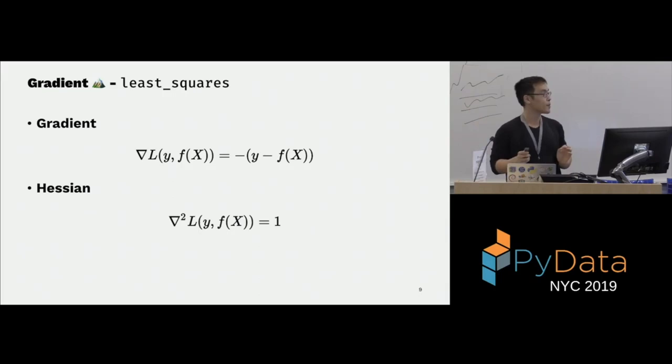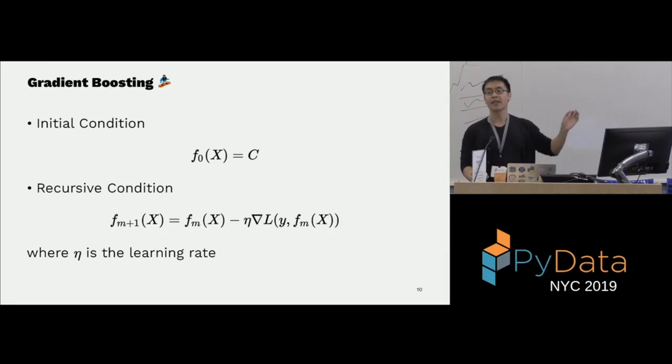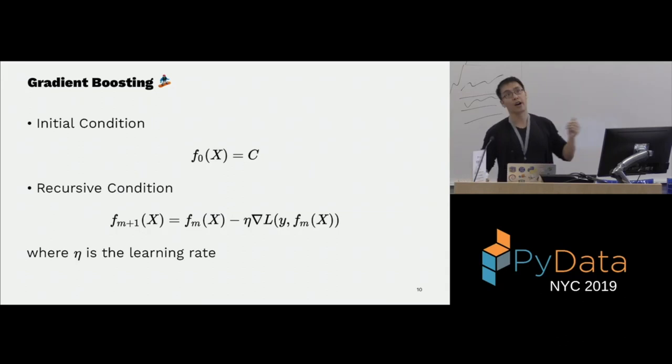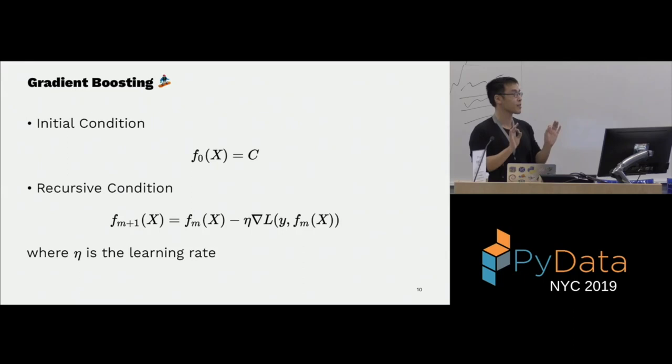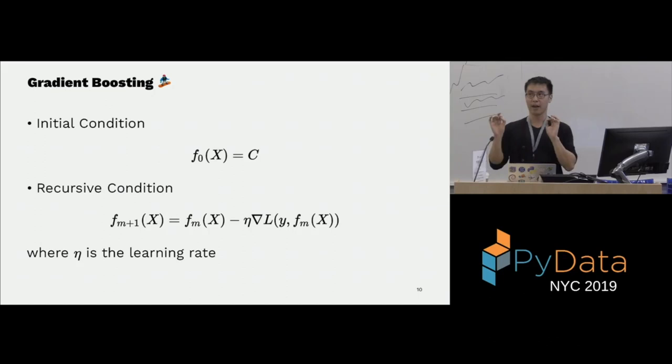In gradient boosting, we're going to learn a series of functions. We start with an initial condition — a constant, the easiest prediction — usually the mean for least squares, or a log odds ratio for cross-entropy. Then the recursion condition looks very much like gradient descent, but the gradient is taken with respect to the function. There's also a learning rate, just like in normal gradient descent.